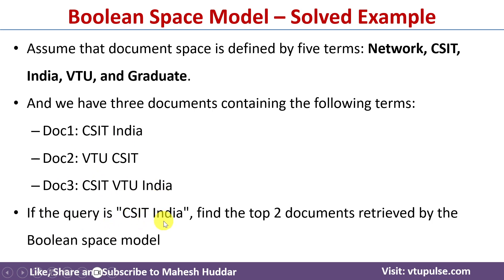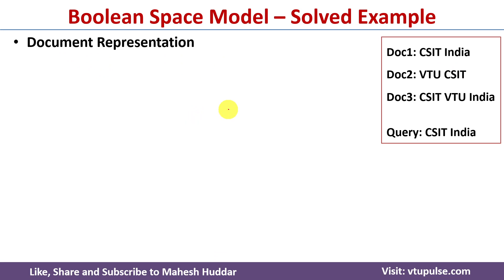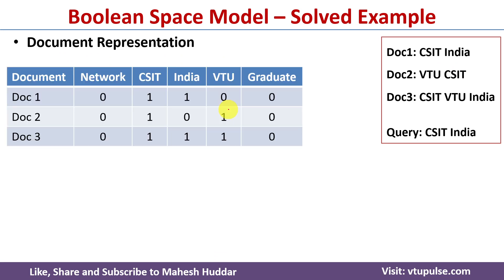If the query is csit AND india, we use the boolean space model to retrieve the top two documents. In the boolean space model, if a document contains a term it is noted as one, otherwise it is noted as zero. Document representations are shown in the table below.